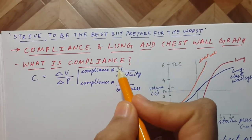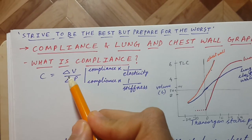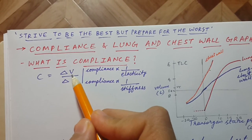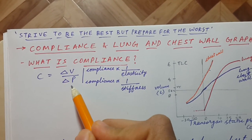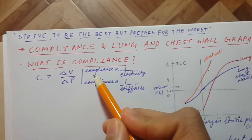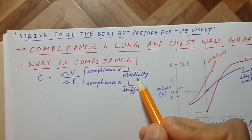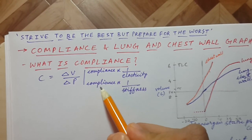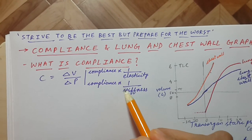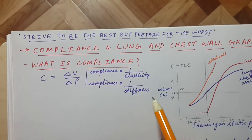What is compliance? Compliance is equal to change in volume divided by change in pressure. Compliance is inversely proportional to elasticity, and compliance is also inversely proportional to stiffness.